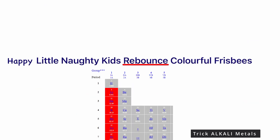Now in this trick, if you add 'Happy,' you can remember that in group one of the periodic table there is hydrogen also. Hydrogen is not an alkali metal, but if you want to remember all the elements of group one of the periodic table, just add 'Happy' in this mnemonic.